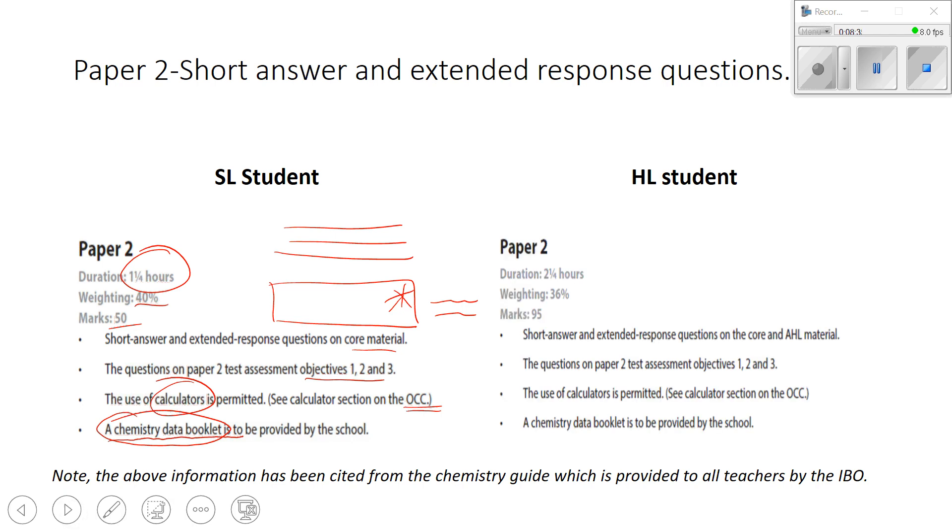Similarly, for higher level, you have short answer and extended response questions covering objectives one, two and three. You're allowed to use a calculator and you're allowed to have a chemistry data book. The exam is an hour longer, though, at two hours, 15 minutes. Yes, the weighting is less at 36 percent. So paper two is hard work for higher level students, but it has a lower weighting.